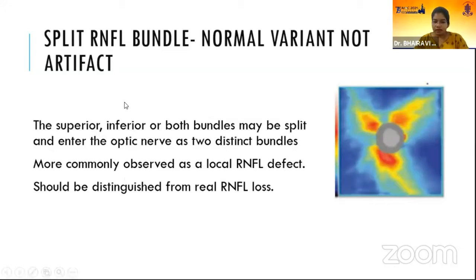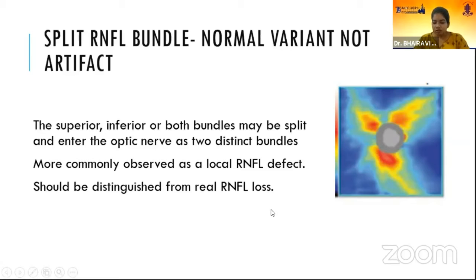In a split RNFL bundle, the superior, inferior, or both bundles may be split and enter the optic nerve as two distinct bundles. It is more commonly observed as a local RNFL defect, but it should be distinguished from real RNFL loss.